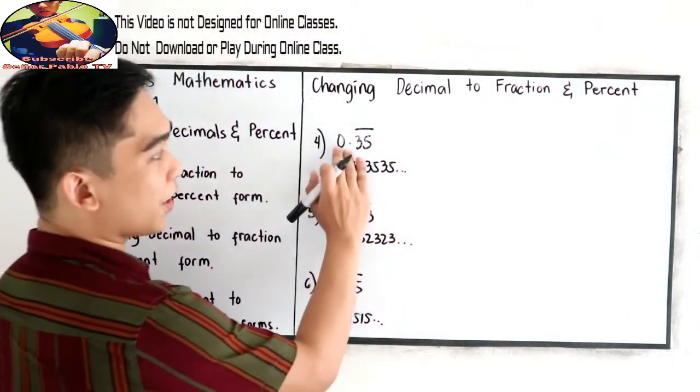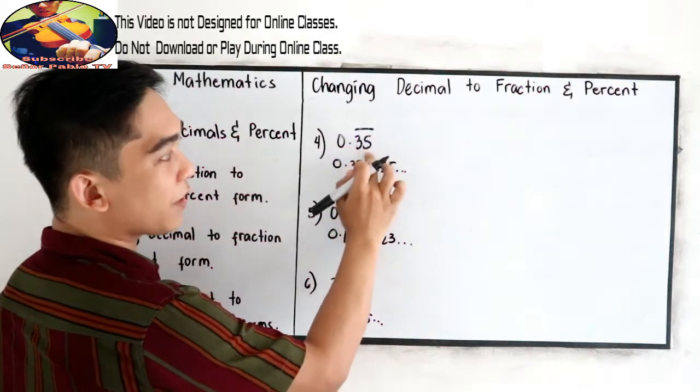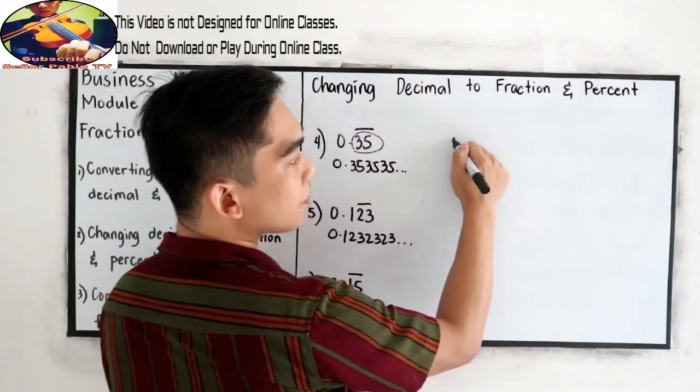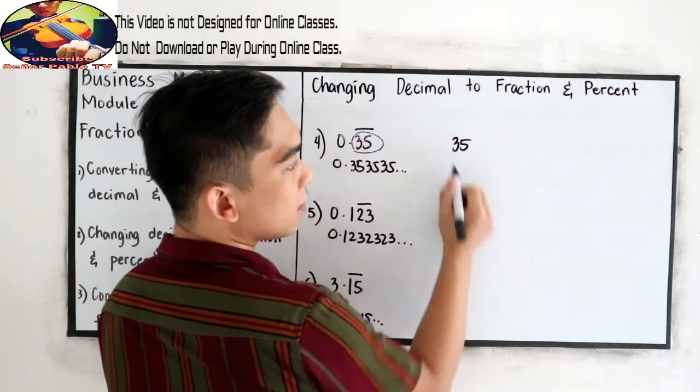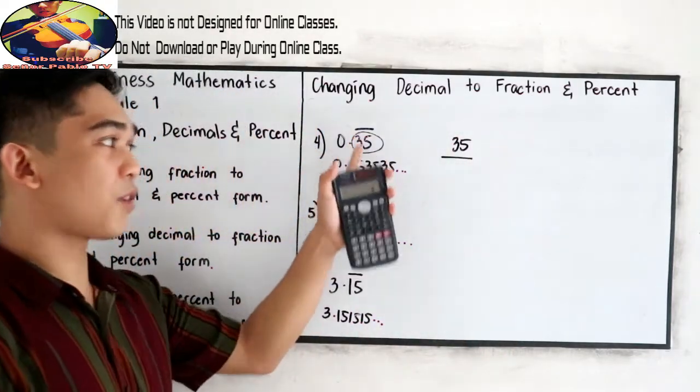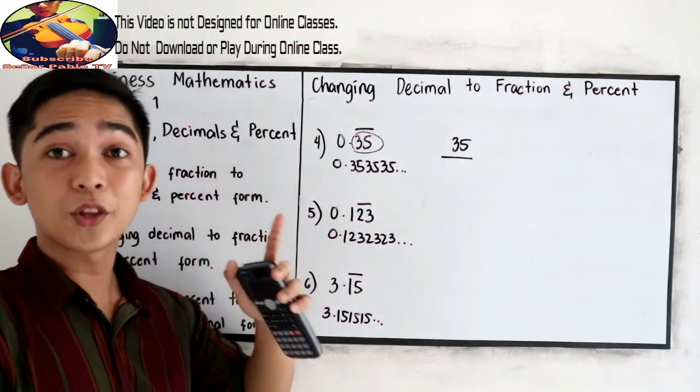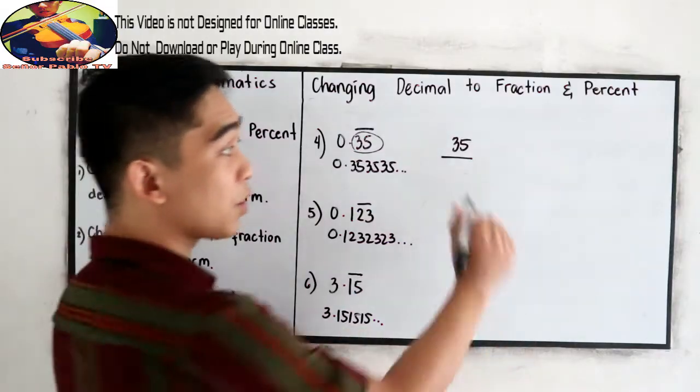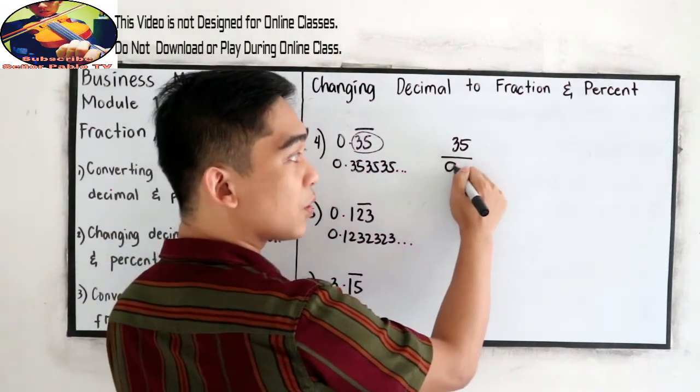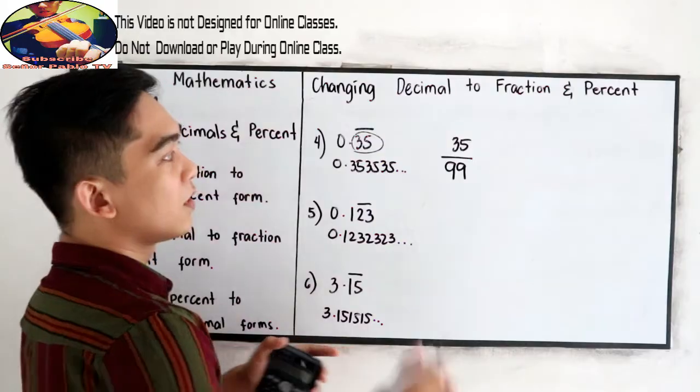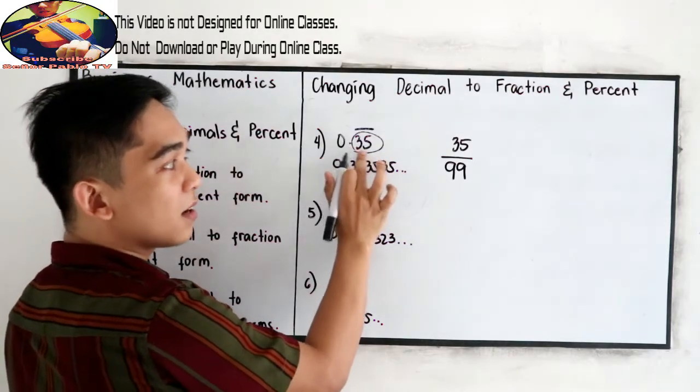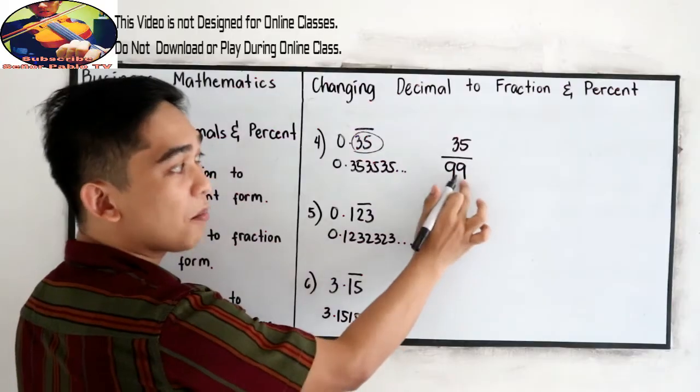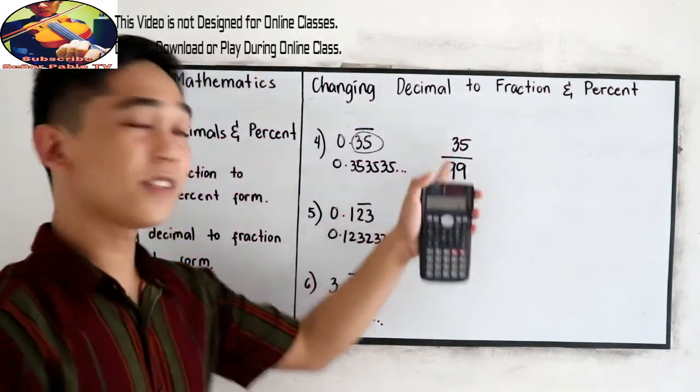So let's start with number four. 0.35 with fraction bar. So just copy our fraction, which is 35. Over, since this is repeating, we are not going to use the zeros as in our denominator. So we're going to write, instead of zero, we're going to write 9 and 9. So we have two decimal point in our decimal, so two numbers in our denominator.